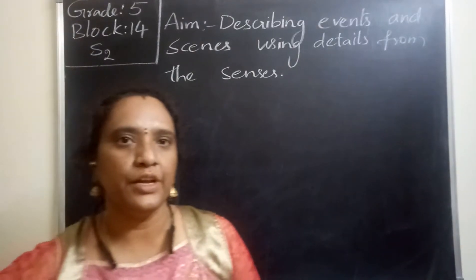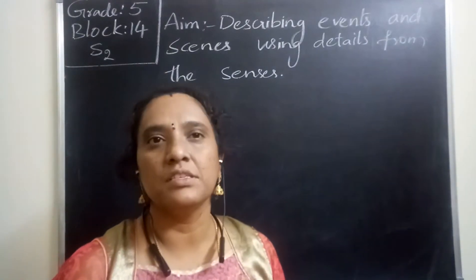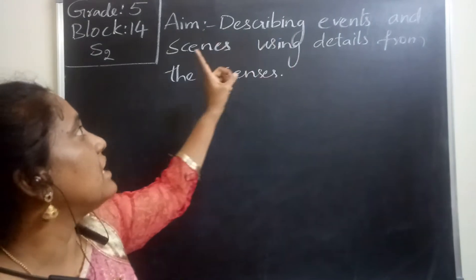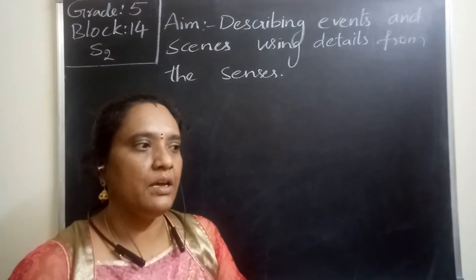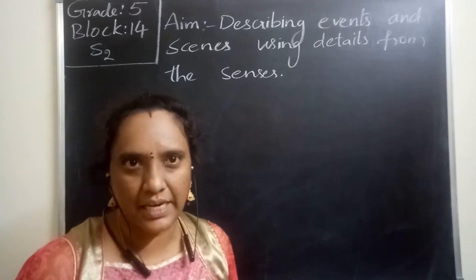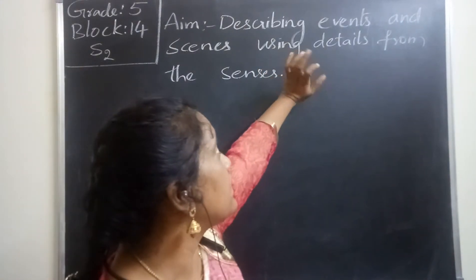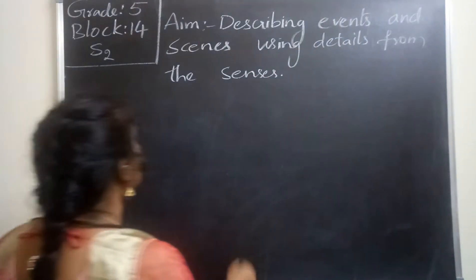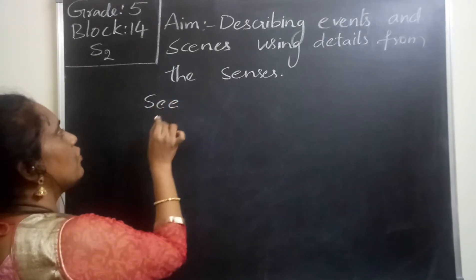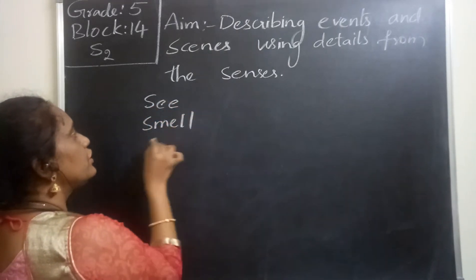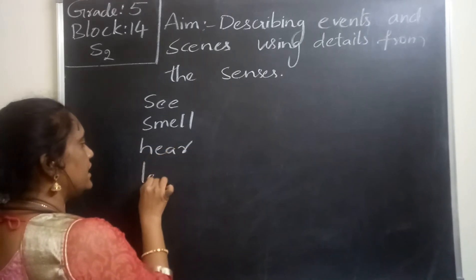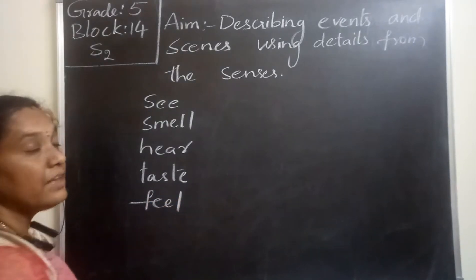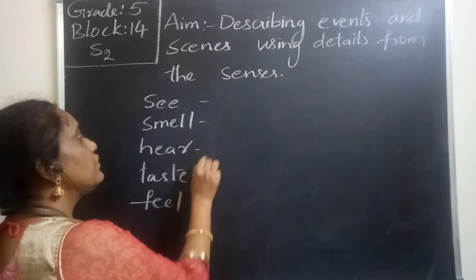Today we are going to discuss our senses and how we describe events using those senses. Our aim is to describe events and scenes — whether present or past — using details from the senses. The senses are what we see, what we smell, what we hear, what we taste, and what we feel. These are the five things we experience and describe using our senses.